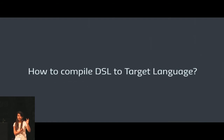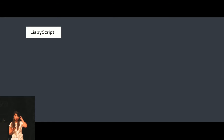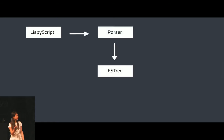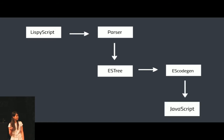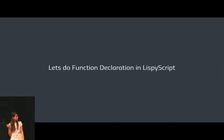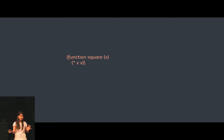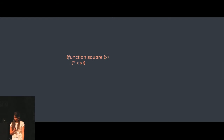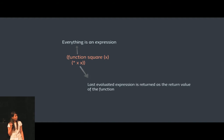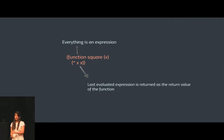Let's see how we would use this AST to compile a domain specific language to JavaScript. We take Lispy Script, parse it using a parser, generate the AST out of it, and use a generator like escodegen to compile it to JavaScript. This is a simple function declaration in Lispy Script. It starts with the keyword 'function', signifying a function declaration. It has an identifier, takes parameter x, and all the other expressions after the parameters are considered the function body. There is no return keyword — in Lisp, the last evaluated expression in a function body is returned as the return value.